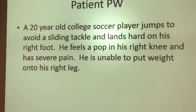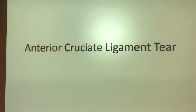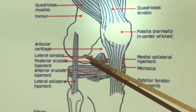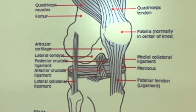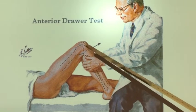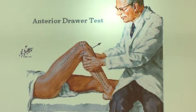This is a 20-year-old soccer player who jumps to avoid a sliding tackle and lands hard on his right foot. He feels a pop in his knee, has severe pain, and is unable to put weight on his right leg. As you can imagine, this is an anterior cruciate ligament tear — an ACL tear. The ACL is in the middle of the knee joint, along with the posterior cruciate ligament, or PCL. We also see injuries to the medial and lateral collateral ligaments. Clinically, you can tell if a person has an ACL tear by doing the drawer test — you pull on the lower leg and it moves loosely like a drawer.